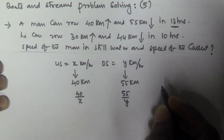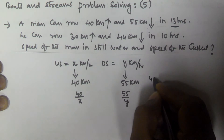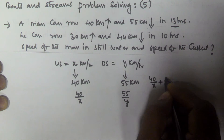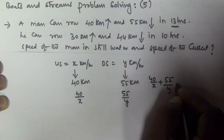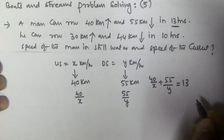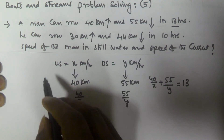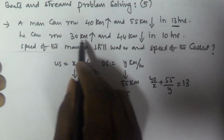So the total time is 13 hours, which means 40/x plus 55/y is equal to 13.